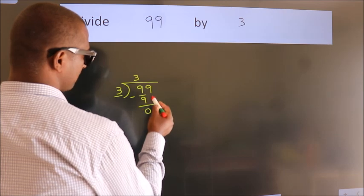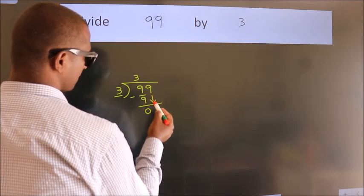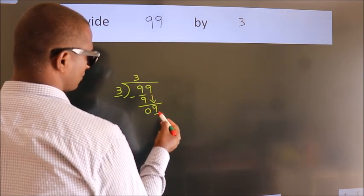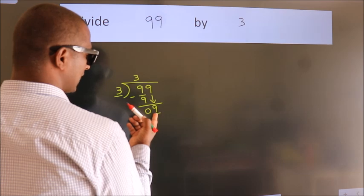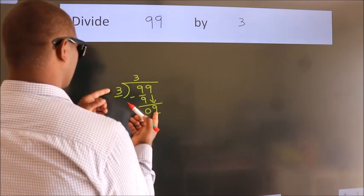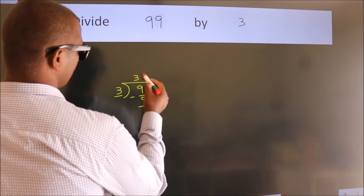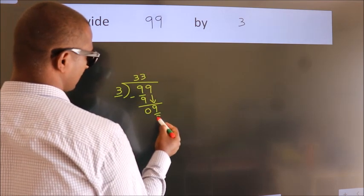After this, bring down the beside number — so 9 down. When do we get 9? In the 3 table, 3 threes make 9.